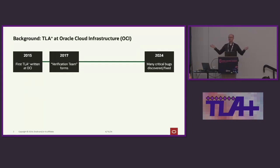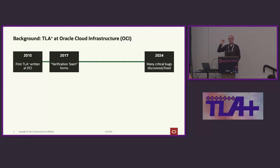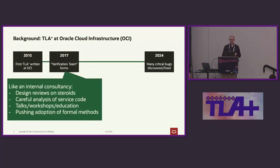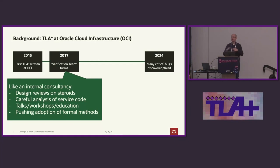At Oracle, Oracle is getting into the cloud game — a bit of a latecomer, but they have some really strong work they're doing. This started back in about 2015, and in that same year, the first TLA+ was written at Oracle Cloud Infrastructure. Chris Newcomb, many of you will know him, works at Oracle now. He started a verification team in 2017. I joined about a year after that. This team works like an internal consultancy. We do basically design reviews on steroids, careful analysis of service code, talks, workshops, education internally to bring TLA+ to the masses, and broadly pushing adoption of formal methods to improve software quality.